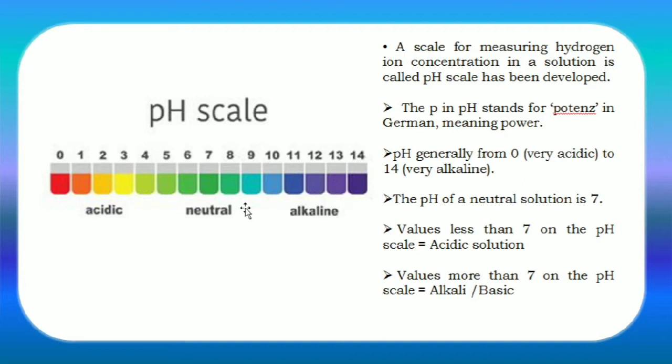So that is about the pH scale. The more the value exceeds 7, the more alkaline it is.